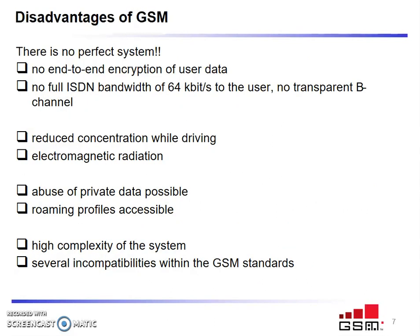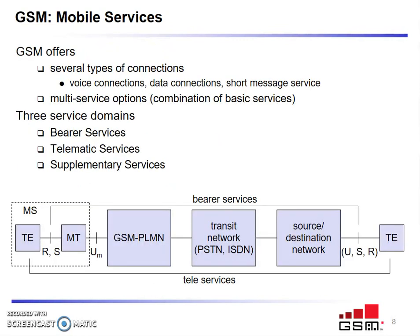Some disadvantages of GSM are: there is no end-to-end encryption of user data, no full ISDN bandwidth of 64 kilobits per second to the user, reduced concentration while driving, high electromagnetic radiation, roaming profiles are accessible to all, abuse of private data is possible, high complexity of the system, and several incompatibilities within the GSM standards.